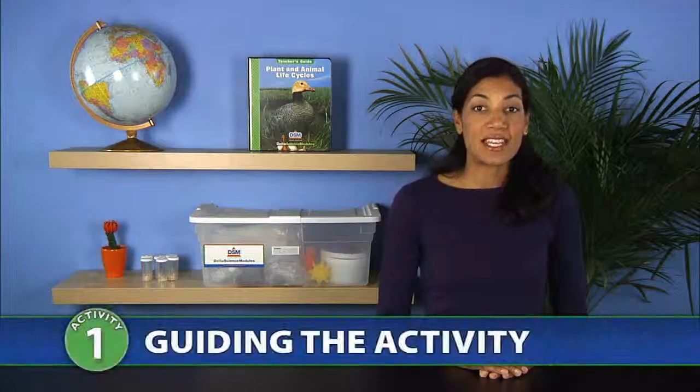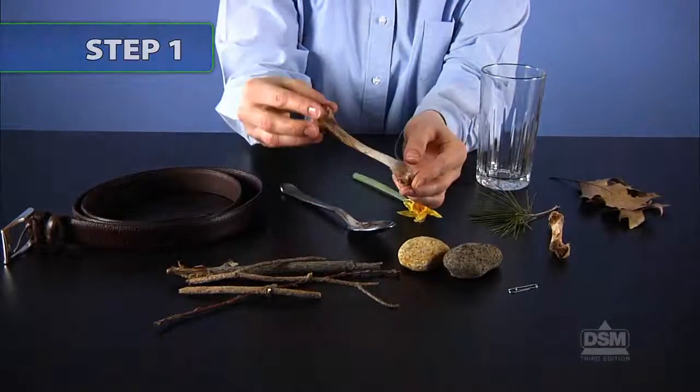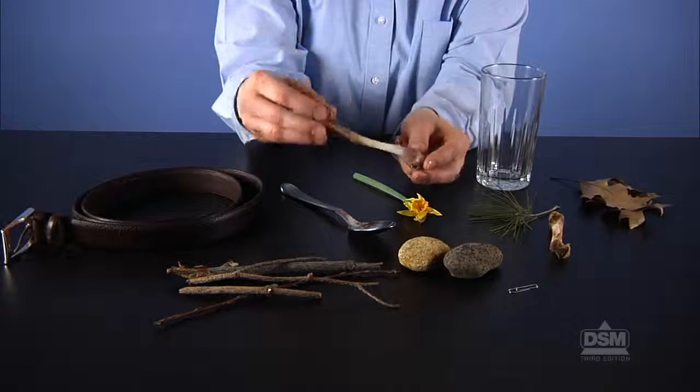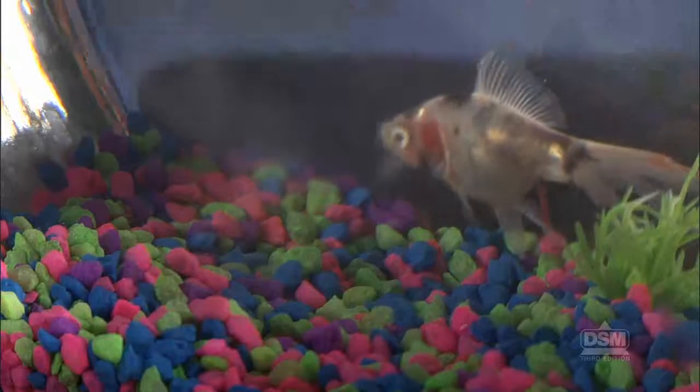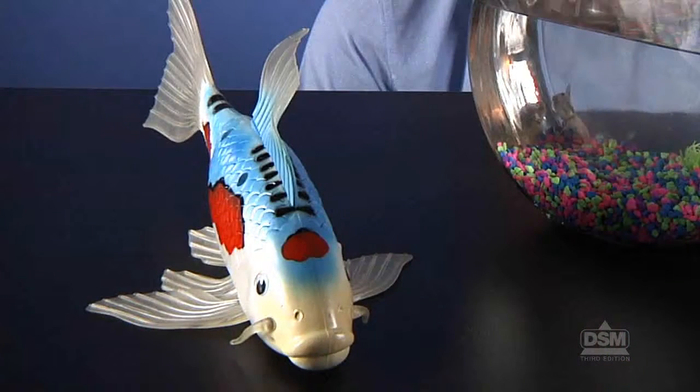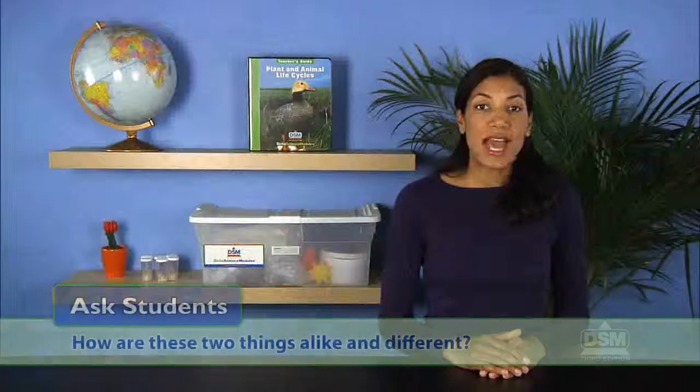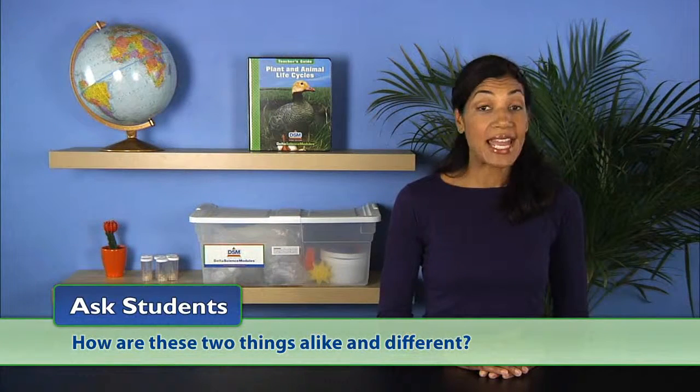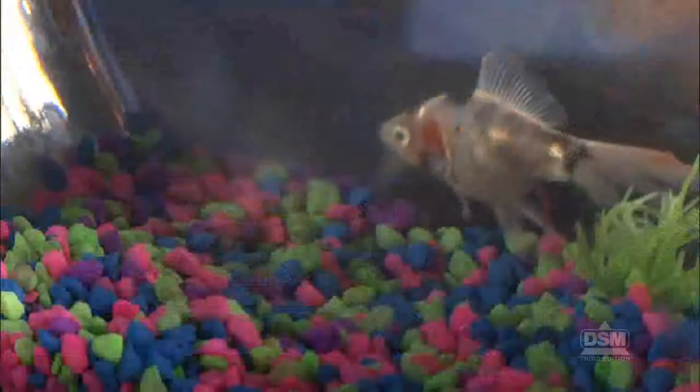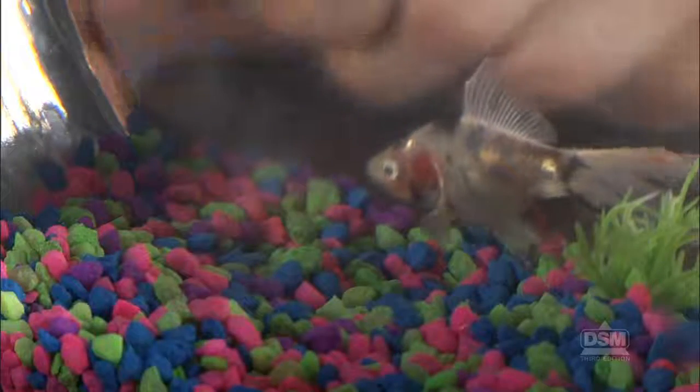To begin the activity, give students time to explore the materials displayed on the table. Point out the living animal and the stuffed animal. Ask students how these two things are alike and different. Students should have observed that while both are animals, one is a real living animal and the other is a toy.